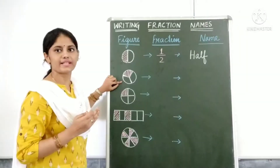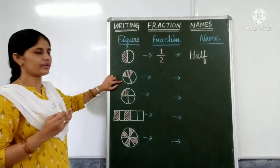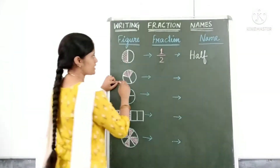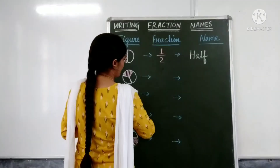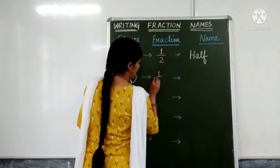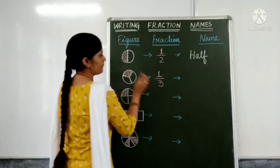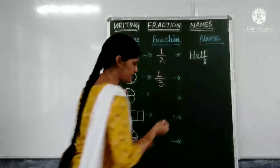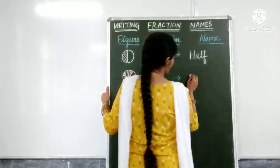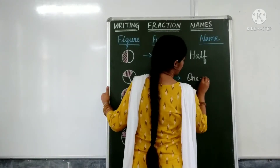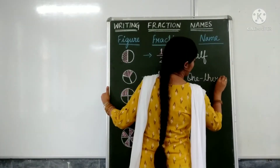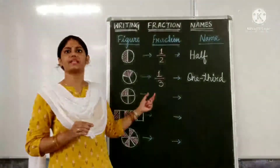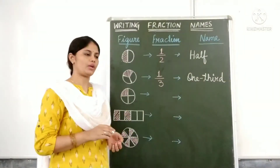Coming to the second figure. Here we have a total of 3 parts and 1 part is shaded. The fraction of the shaded part is 1 by 3. The name for it is one third of whole — one third of whole represents the 1 by 3 fraction.